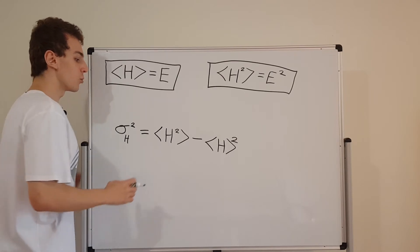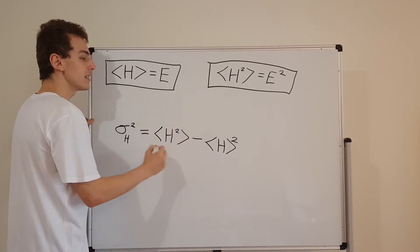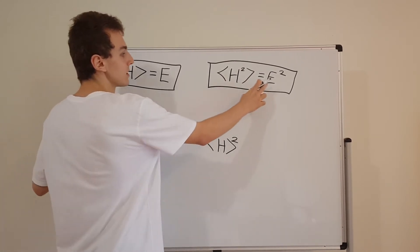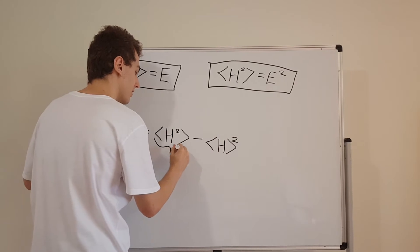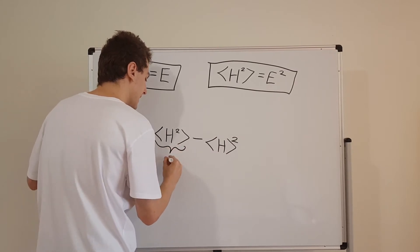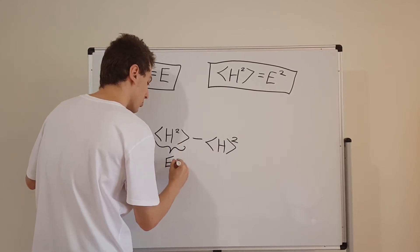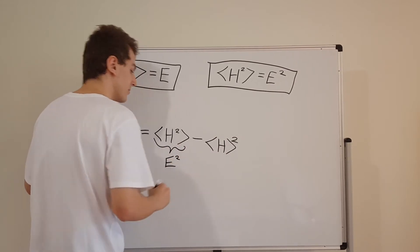So we know what the first term is — this is equal to E squared. So that term is E squared, which we found in a previous video.